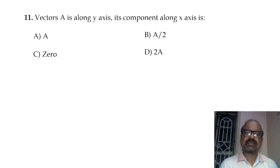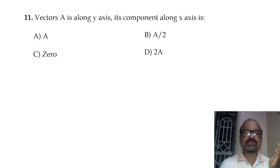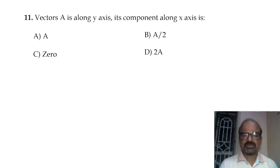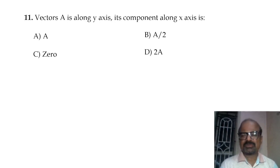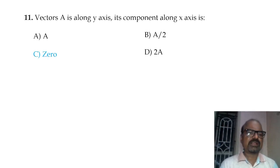Vector E is along the y-axis; its component along the x-axis. Since the angle between the vector and the x-axis is 90 degrees, the x-component is zero — cosine 90 is zero.